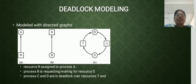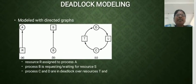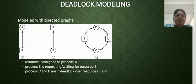Deadlock modeling. Here, a picture explains the model of deadlocks. First, resources are assigned to process A. Second, process B is requesting or waiting for resource S. Third, process C and R are in a deadlock over resources T and U.